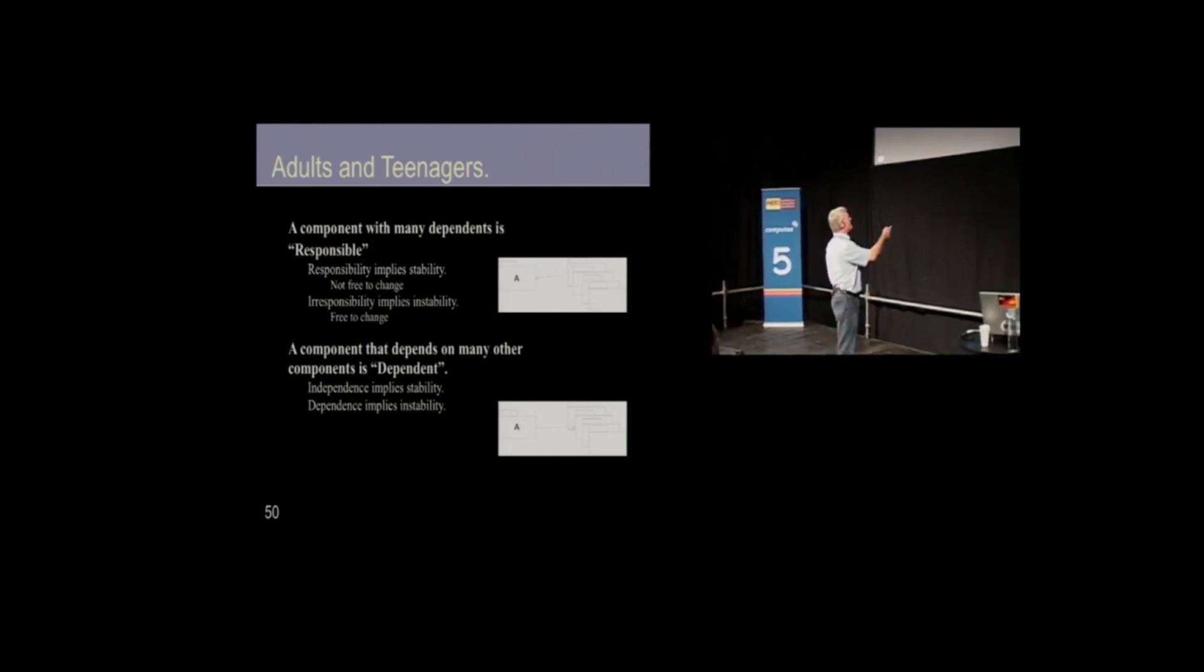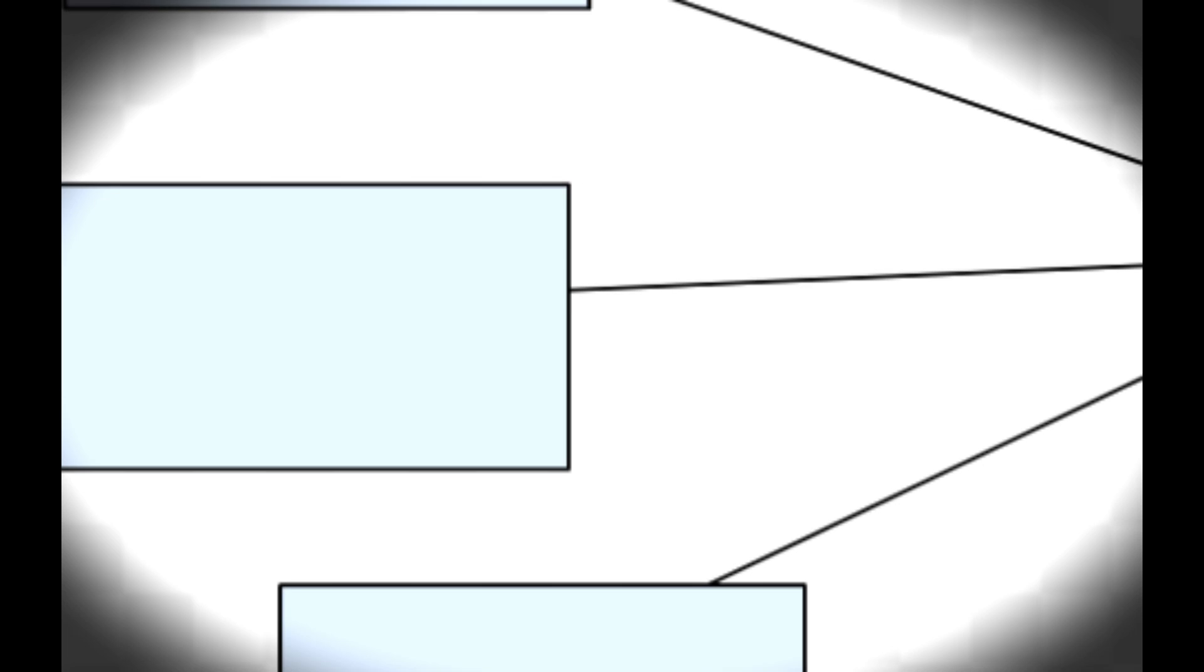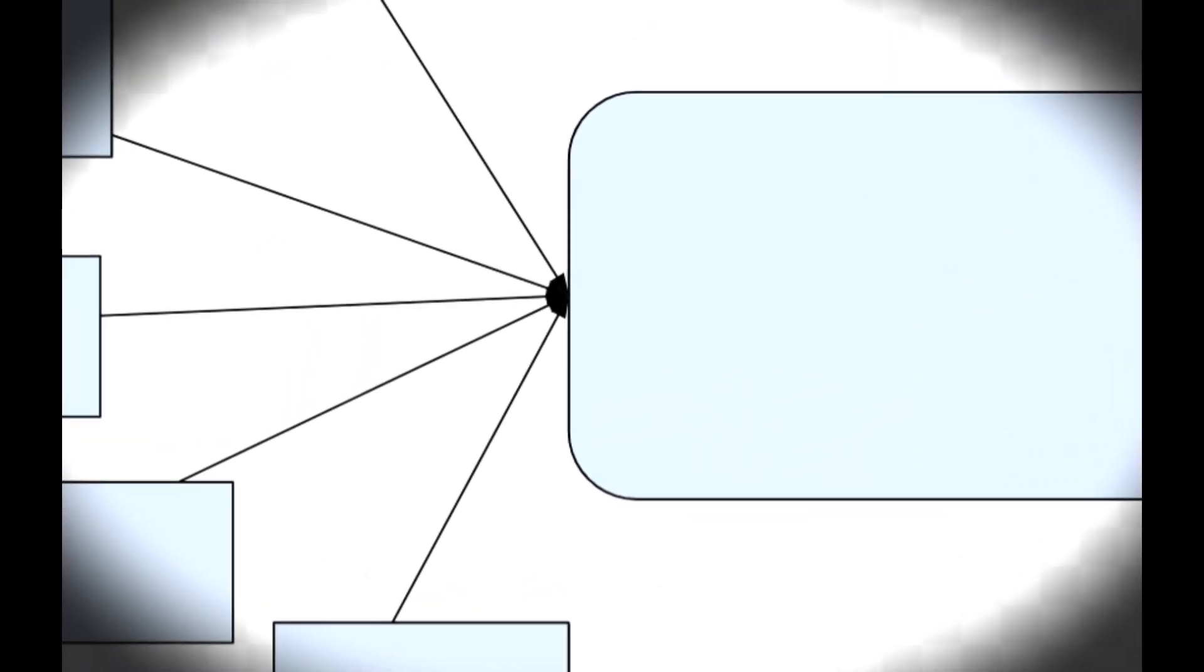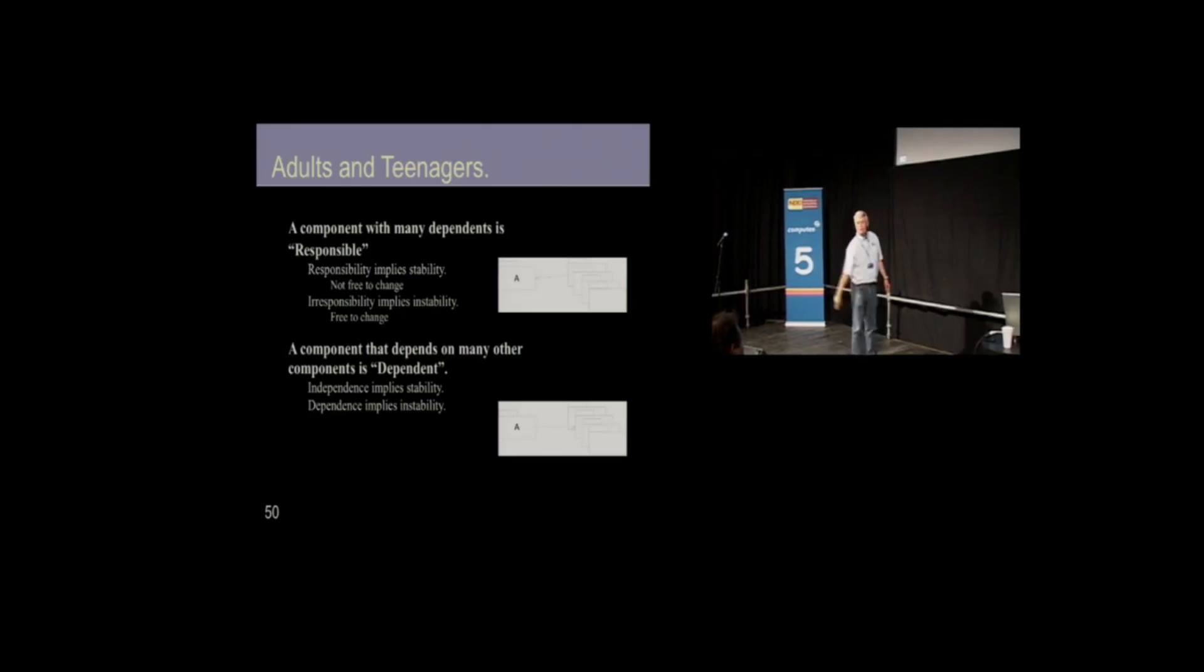Then there's this kind of component. This kind of component depends upon many others, but nobody depends upon it. It is irresponsible. No one depends upon it. And it is dependent because it depends upon many others. Irresponsible and dependent. It is a teenager.